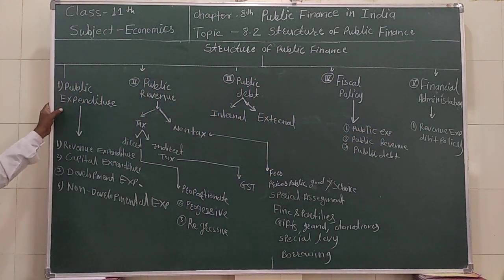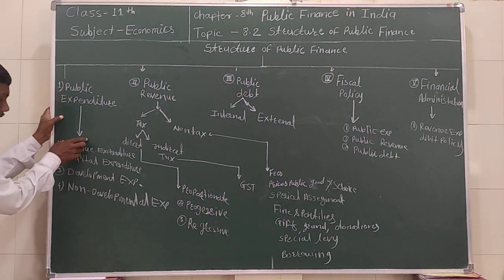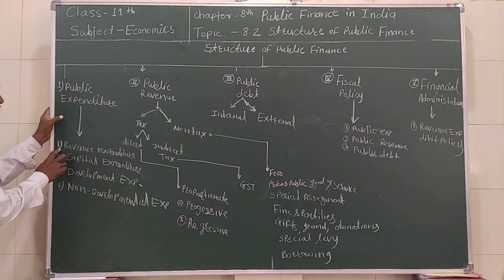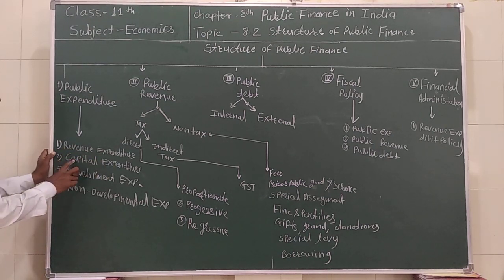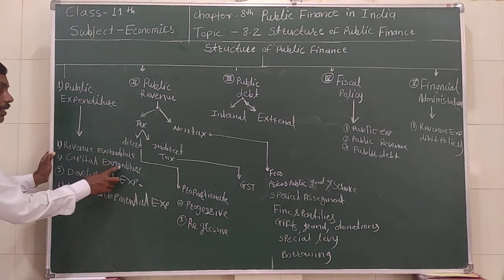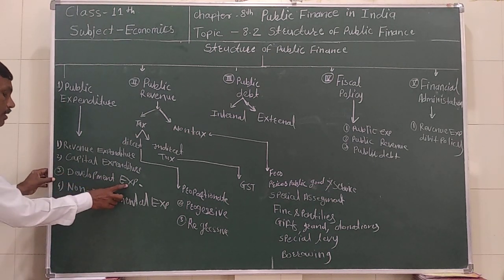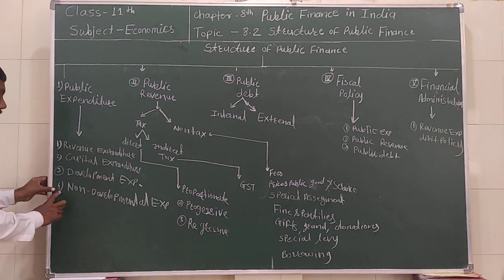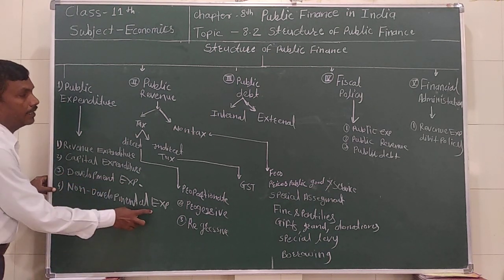The first component is public expenditure. We are talking about four types: first, revenue expenditure; second, capital expenditure; third, development expenditure; and fourth, non-development expenditure.